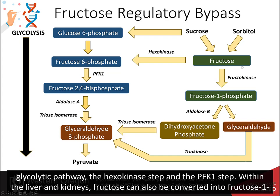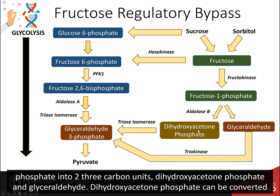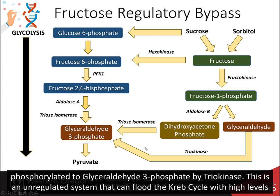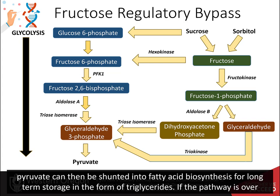Within the liver and kidneys, fructose can be converted to fructose-1-phosphate by fructokinase. From there, another isozyme of aldolase, aldolase B, can cleave the fructose-1-phosphate into two three-carbon units: dihydroxyacetone phosphate and glyceraldehyde. Dihydroxyacetone phosphate can be converted to glyceraldehyde-3-phosphate by triose isomerase and then continue in the glycolytic cascade. Glyceraldehyde can be phosphorylated to glyceraldehyde-3-phosphate by triokinase. This is an unregulated system that can flood the Krebs cycle with high levels of fructose entering the cell, for example from high fructose corn syrup, sucrose, and other sweeteners common to the westernized diet. The excess pyruvate can then be shunted into fatty acid biosynthesis for long-term storage in the form of triglycerides.